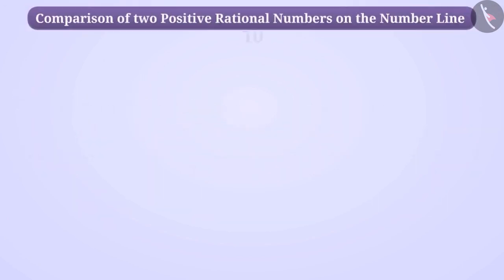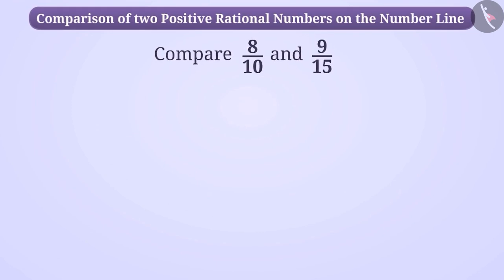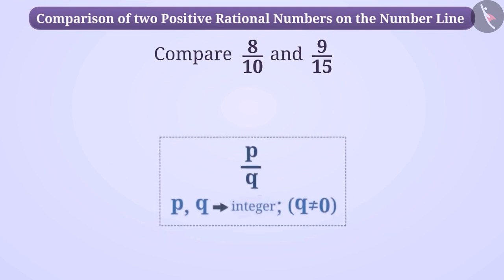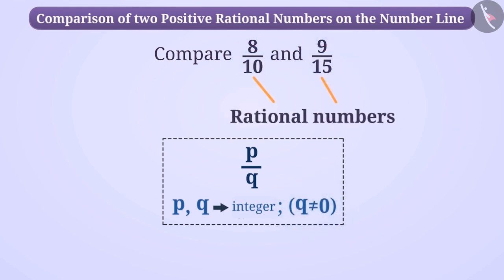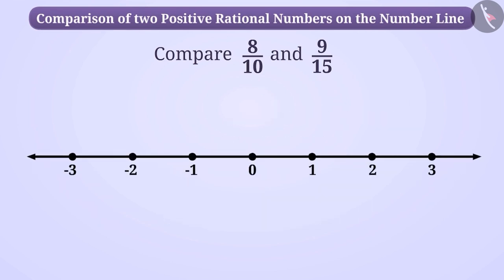Let's compare 8/10 and 9/15. As we can see, both the numbers are in the form of p/q where the numerator and denominator of both are integers, and none of the numbers have the denominator as 0. Therefore, both of these are rational numbers. To compare these numbers, we will first mark them on a number line.